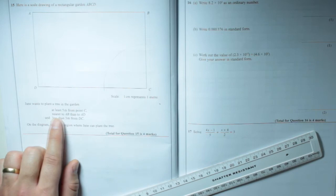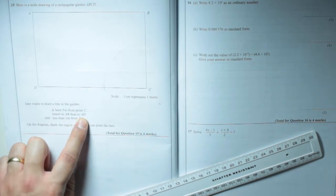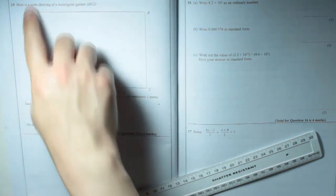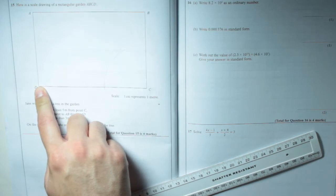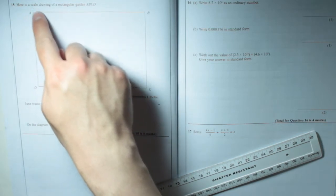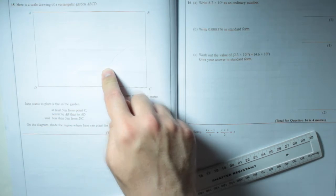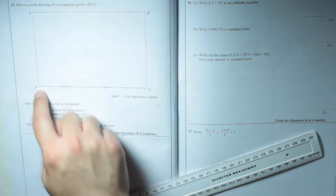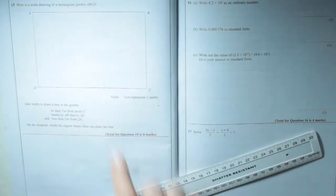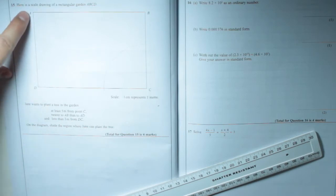Okay, next part. Nearer to AB than to AD. We've got two lines: AB, AD. So basically, there's a dividing line going down the middle somewhere. Where if you're on this side of it, you're closer to AD. If you're on that side of it, you're closer to AB. So what we're going to have to do is bisect this angle here at that point there.